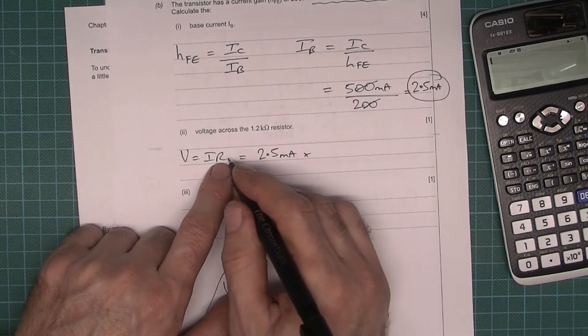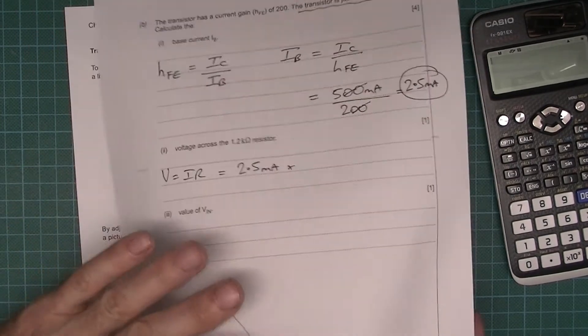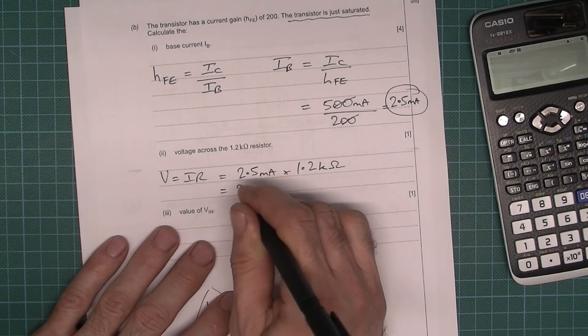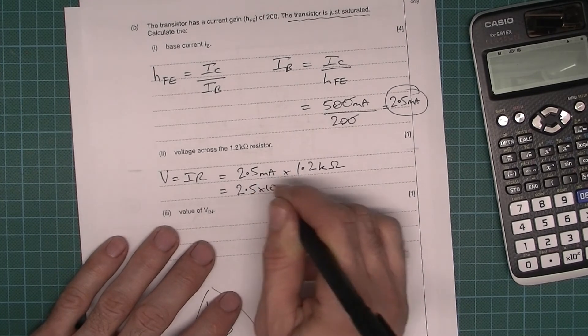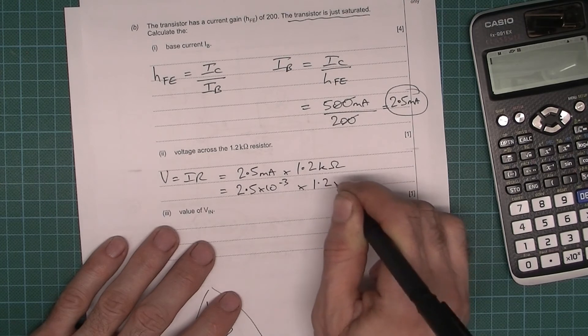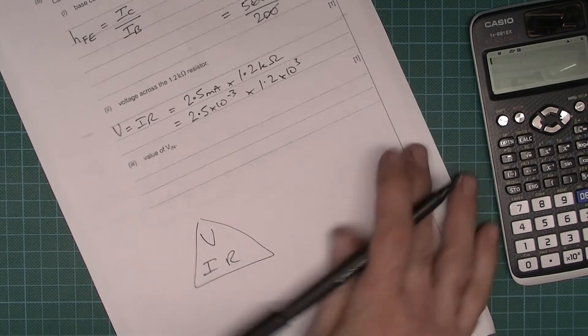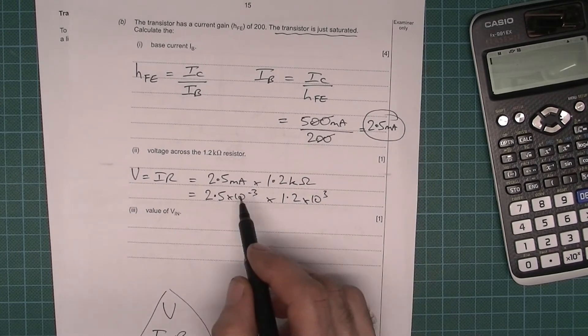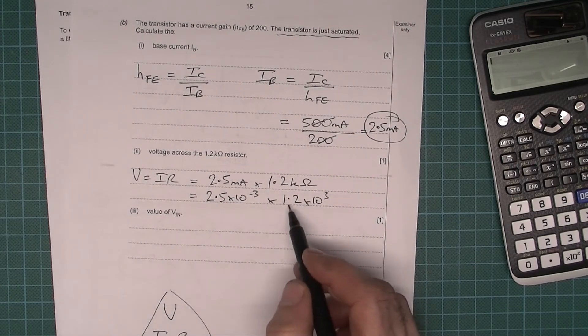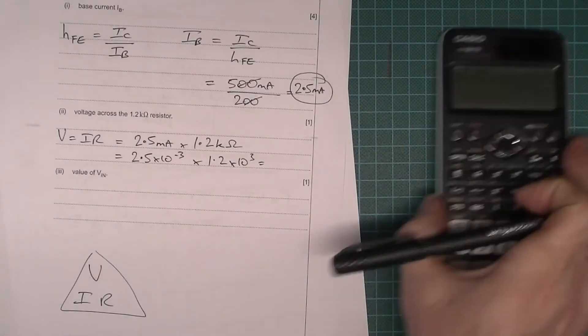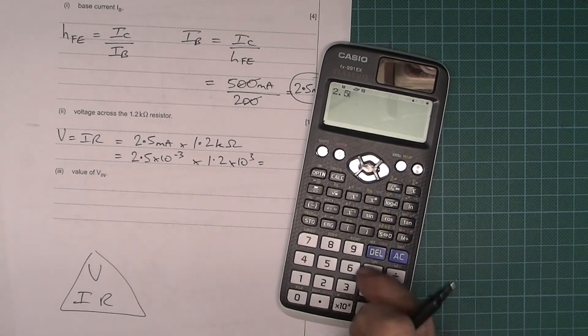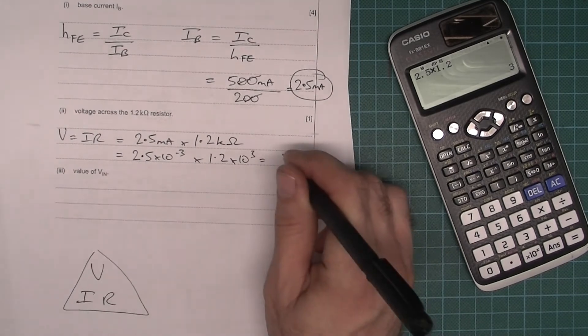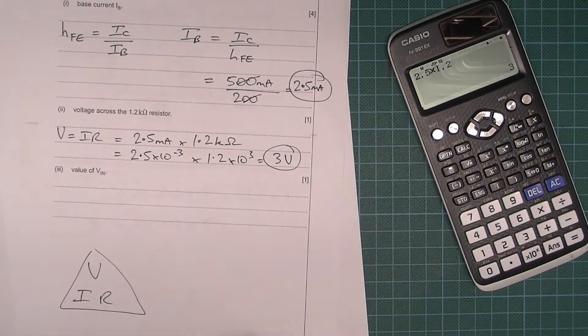And then that's going to be times the resistance, which was 1.2. Now if you wanted to, you could have written that as 2.5 times 10 to the minus 3 times 1.2 times 10 to the 3. Hopefully you'll see that if you've got thousandths times thousands, you can cancel them out. So you could cancel those two bits out. So really it's only 2.5 times 1.2. 2.5 times 1.2 gives you 3. Remember volts. So 3 volts. Always circle your answer.